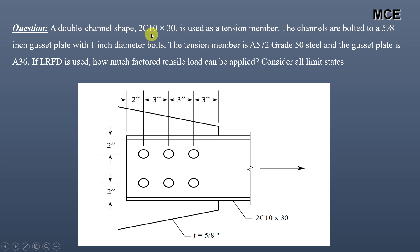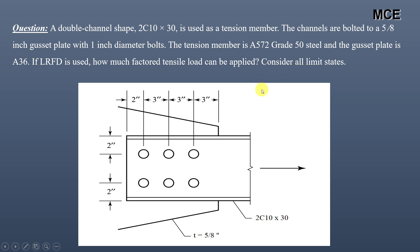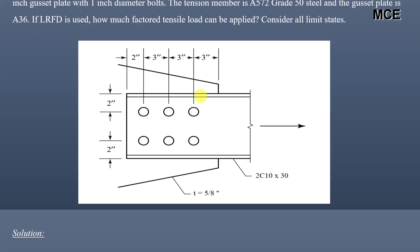The given problem states that a double channel shape C10x30 is used as a tension member. The channels are bolted to a 5/8 inch gusset plate with 1 inch diameter bolts. The tension member is A572 Grade 50 steel and the gusset plate is A36 steel. Using LRFD, we need to find how much factored tensile load can be applied considering all limit states. This problem will be solved using AISC 360.